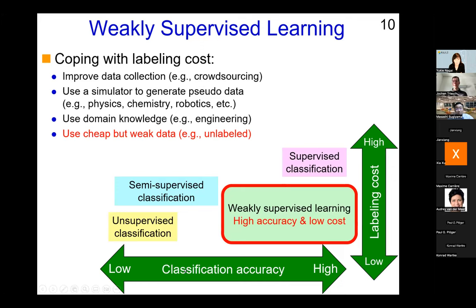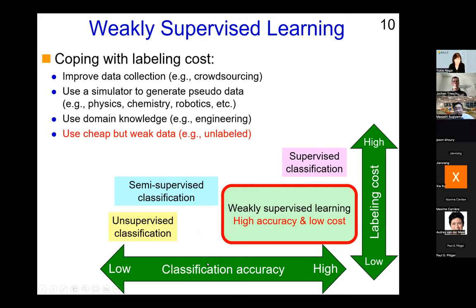To summarize: on a plot with classification accuracy on the horizontal axis and labeling cost on the vertical axis, supervised classification achieves highest accuracy but also highest labeling cost. Unsupervised classification has lowest labeling cost but no accuracy guarantee — bottom left. Semi-supervised classification was expected to work better than unsupervised, but it's not always true — still on the left side. The target of weakly supervised learning is the bottom right corner: high classification accuracy with low labeling cost.